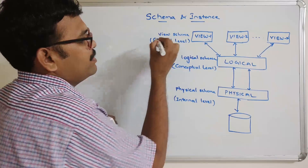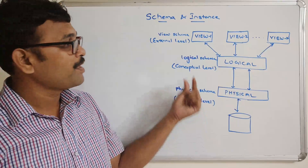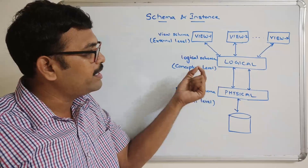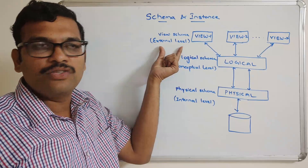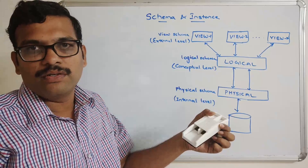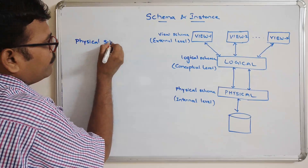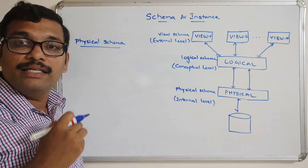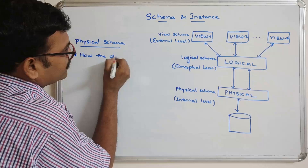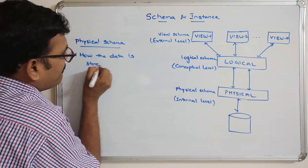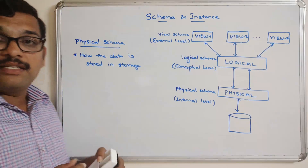The physical schema means the design of a database done at the physical level. The conceptual level means the database design done at the conceptual level, known as a logical schema. The database design done at the external level is known as the view schema, which will have different views. Now, coming to the physical schema — here the data is stored in a physical storage, meaning how the data is stored.